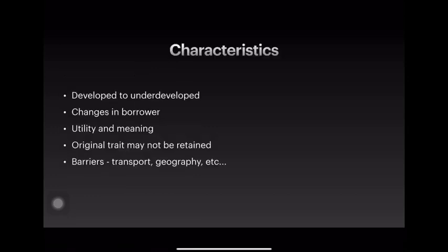Characteristics of diffusionism: diffusionism occurs mostly from developed to underdeveloped cultures. Changes happen in the culture of the borrower. The culture is accepted only based on its usage and meaning, and the original trait of culture need not be retained according to this school of thought. The barriers of diffusionism were considered to be transport, geography, etc.